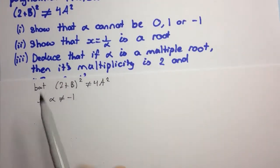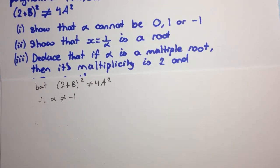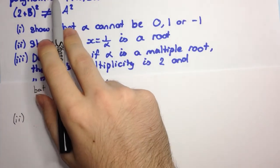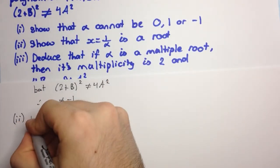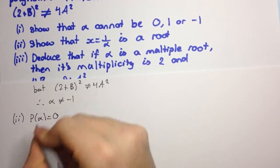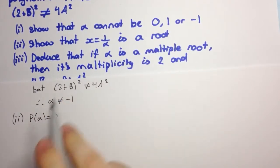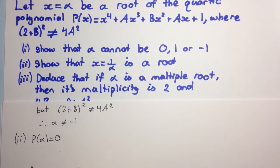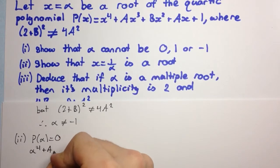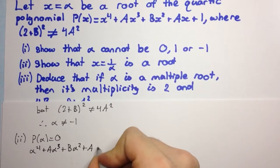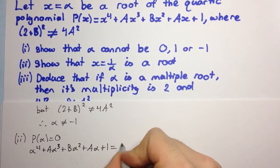Now for the second part: show that x equals 1 on alpha is a root. We already know that p of alpha equals 0 since x equals alpha is a root. So what is p of alpha? That's subbing alpha into the polynomial. We get alpha to the 4 plus a alpha cubed plus b alpha squared plus a alpha plus 1, which equals 0.